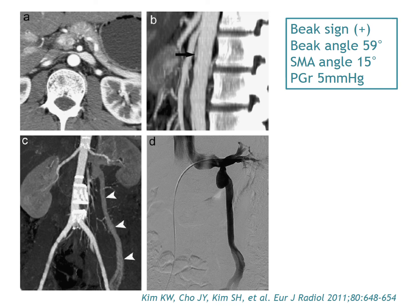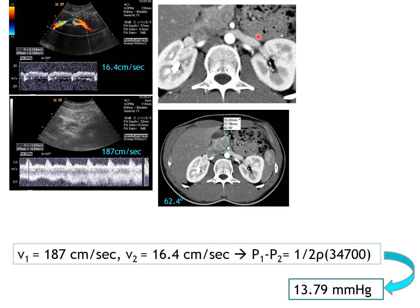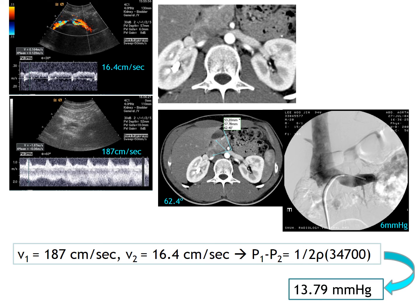Here is a nutcracker syndrome patient from this study. We see a beak sign with a 59-degree beak angle, a very narrow SMA angle of 15 degrees, compression of the left renal vein with collateral flow to the gonadal veins, and a pressure gradient of 5 mmHg. Here is another case with venous flow velocity of 187 cm/sec at the aorto-mesenteric portion and a calculated pressure gradient of 13.79 mmHg. CT shows a beak sign and 62.4-degree beak angle. All findings are consistent with nutcracker syndrome, and the measured pressure gradient was 6 mmHg.